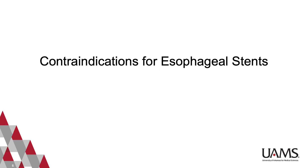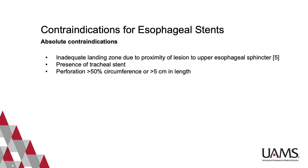In addition, there are also several important contraindications for stent placement. Absolute contraindications include close proximity of the lesion to the upper esophageal sphincter, as this will provide an inadequate landing zone for the stent. Others include presence of a tracheal stent, and perforation measurement greater than 50% of the circumference of the esophagus, or greater than 5 cm in length.